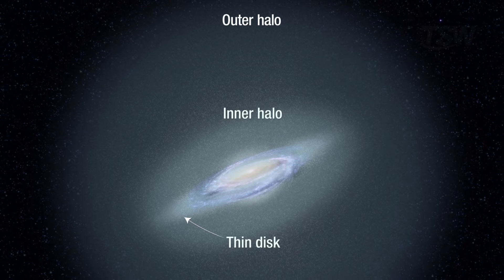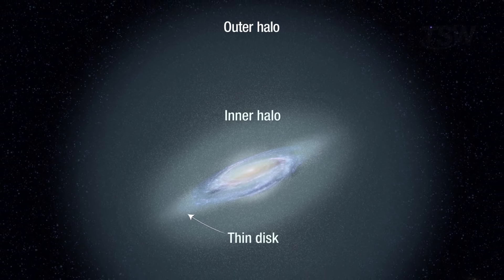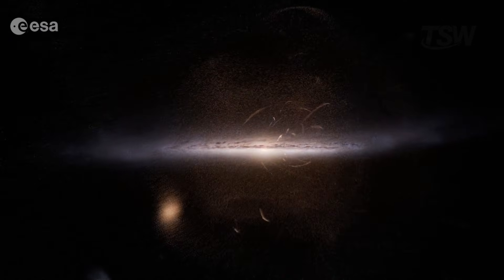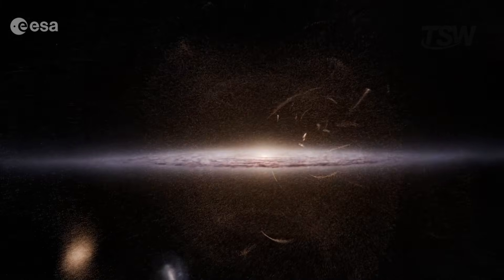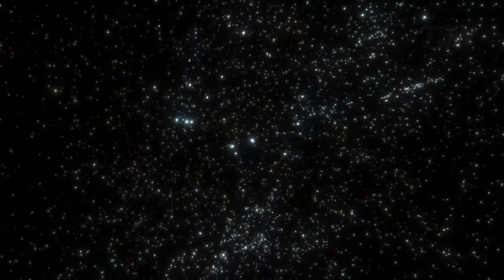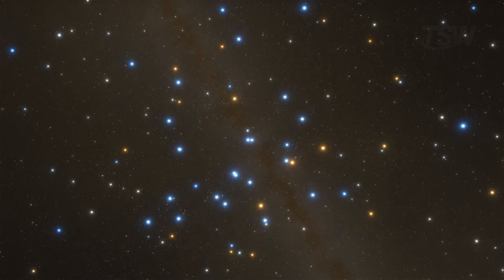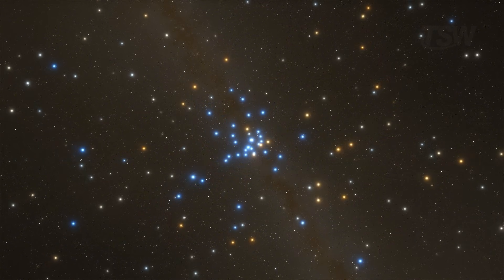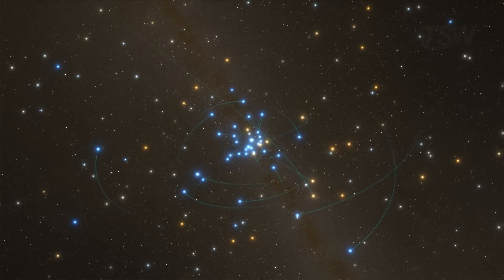Moving even farther up and down, beyond the thick disk, we enter what astronomers call the stellar halo. Here, the Milky Way's appearance changes completely. There's no longer that flattened, well-defined structure. Instead, we find stars scattered through a huge volume in all directions, with odd, elongated, tilted orbits. Many of these stars live grouped in globular clusters — dense bubbles containing hundreds of thousands, sometimes millions of old stars, orbiting the galaxy like small swarms bound by gravity. These globular clusters form a kind of crown around the Milky Way, and almost all of them sit far above or far below the disk.